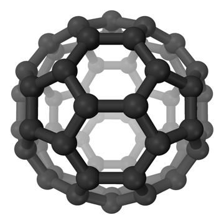Methylamine is an organic compound with a formula of CH3NH2. This colorless gas is a derivative of ammonia, but with one hydrogen atom being replaced by a methyl group. It is the simplest primary amine.